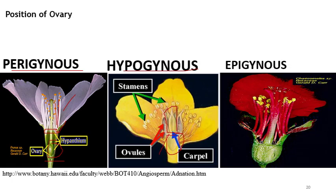In the epigynous condition, the thalamus grows upward and surrounds the ovary, fusing with it. Therefore, the sepals, petals, and stamens are inserted on the top of the ovary. So the gynoecium is inferior but all the other parts are superior.